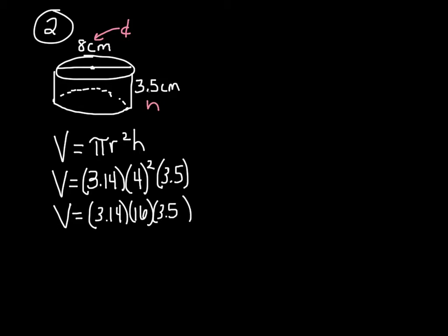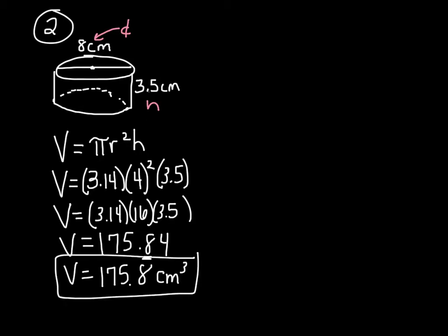And now I multiply the pi, which is 3.14, times the radius squared, which is 16, times the height, which is 3.5. My answer is 175.84. But if I round it to the nearest tenth, it's 175.8, label, cubic centimeters.